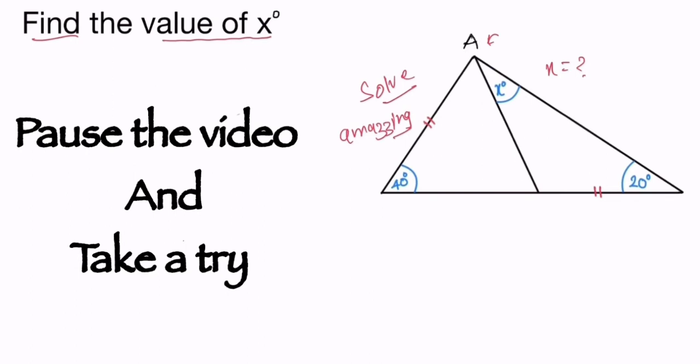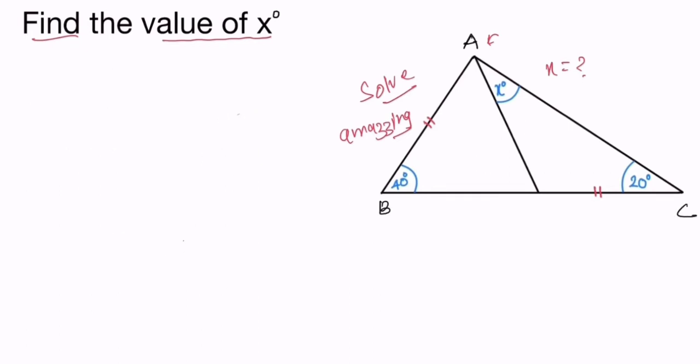Now let's solve this. Write the vertices ABC. Here angle B is 40 degrees, angle C is 20 degrees, and here this is X. These both sides are equal: AB is equal to DC. Here is D, and AB is equal to DC.